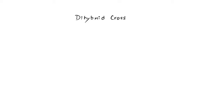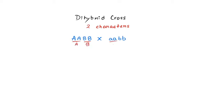Before we start the dihybrid cross, we need to consider two different characters — that is why it is called dihybrid. If I take the parental generations to be capital A capital A capital B capital B, and cross it with another parent which has small a small a small b small b, where A and B are my two characters, then I would get the gametes as capital A capital B and small a small b. If I combine them, I'll get only one genotype: capital A small a capital B small b. This is my F1 generation.